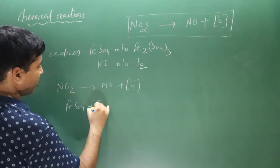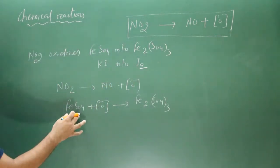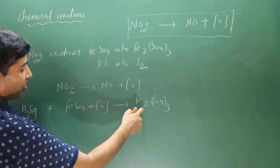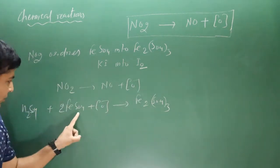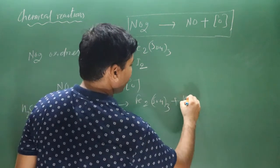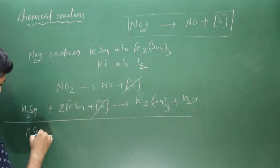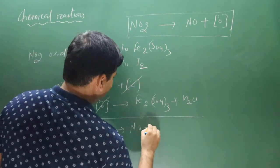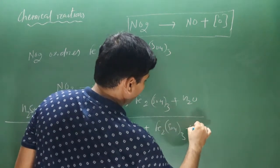FeSO4 is oxidized by nascent oxygen. Balancing: 2 FeSO4, plus H2SO4 (3 molecules total for sulfate balance), with 2 hydrogen forming a water molecule. Final equation: H2SO4 + 2FeSO4 + NO2 → NO + Fe2(SO4)3 + H2O. Reaction is complete.